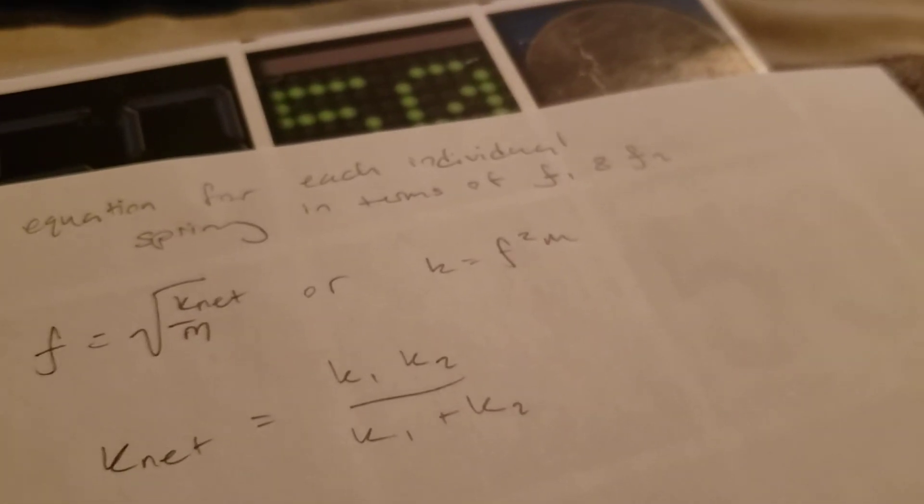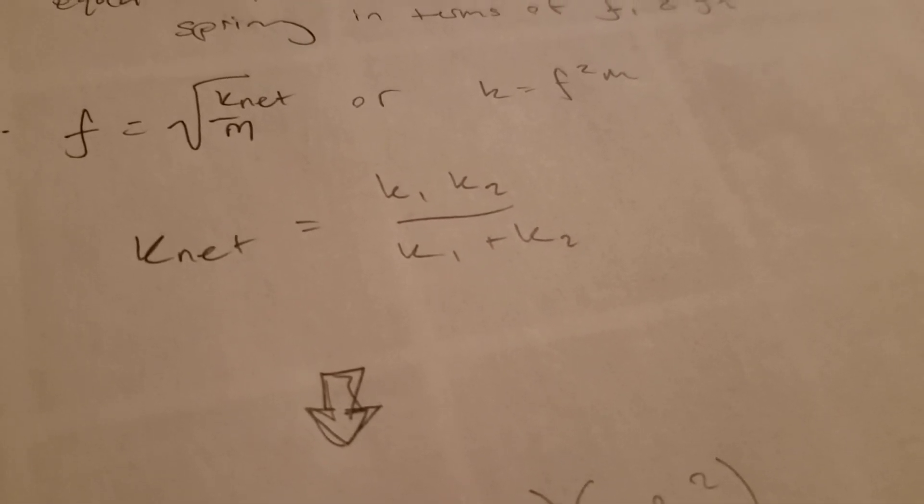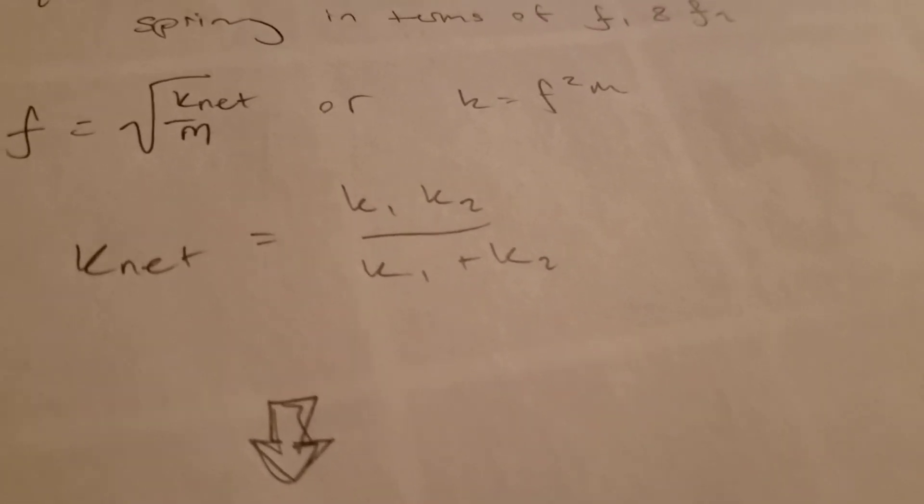And since we were looking for the frequency in terms of individual frequencies of each spring, we're going to break k_net down into this term, which is the spring constants multiplied in the numerator and the spring constants summed in the denominator.